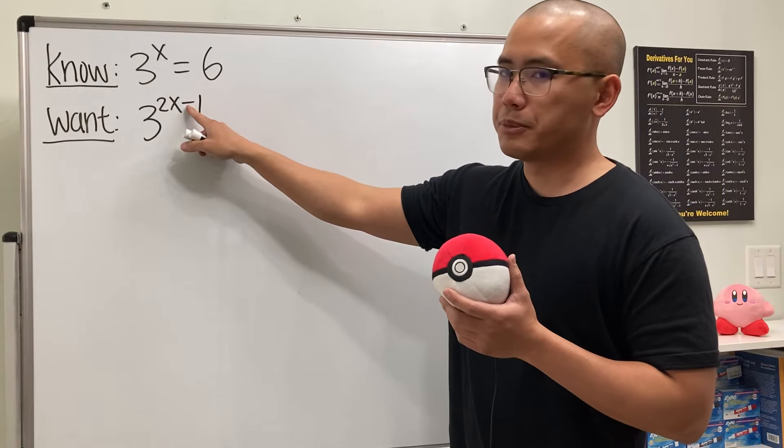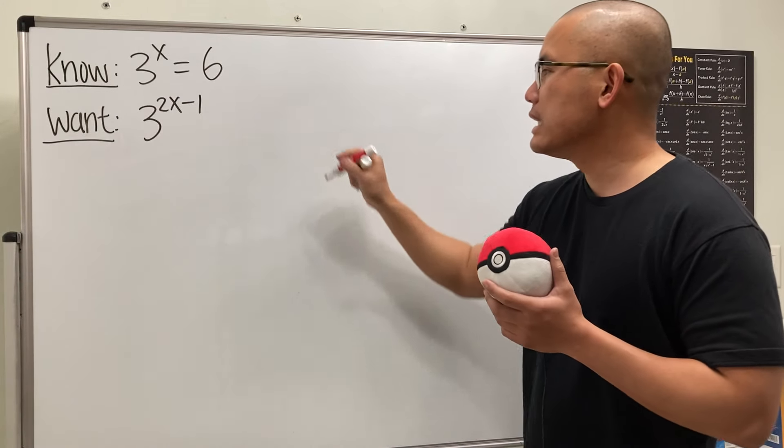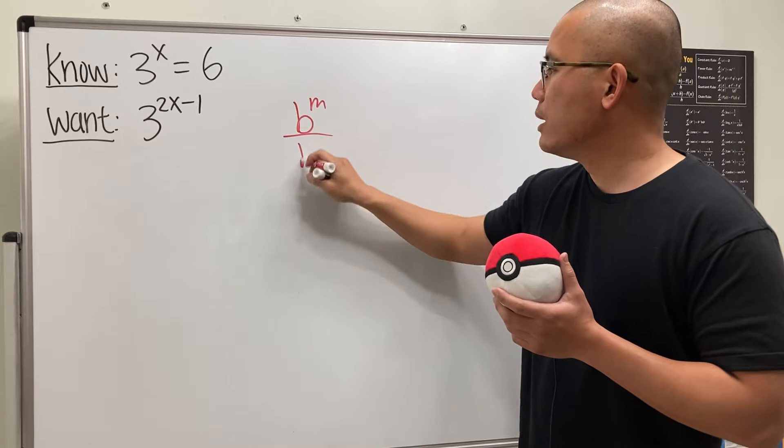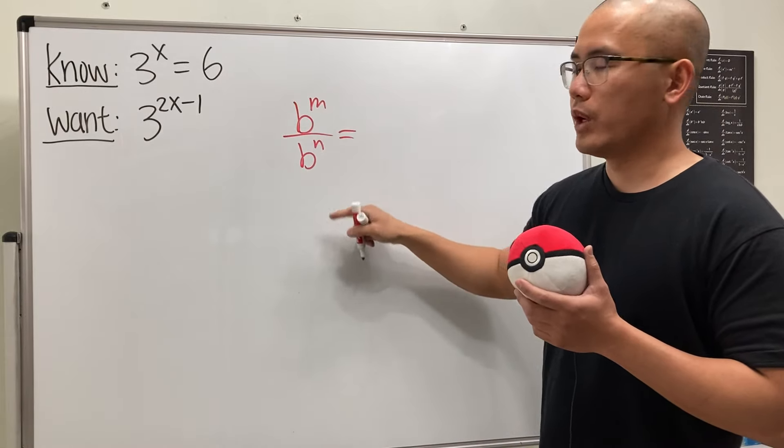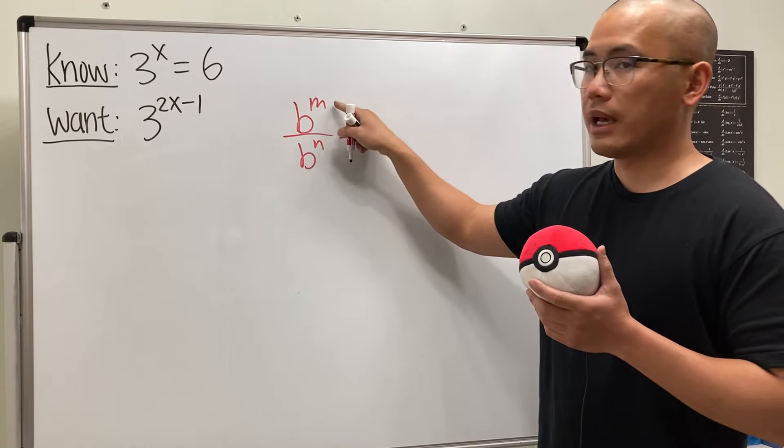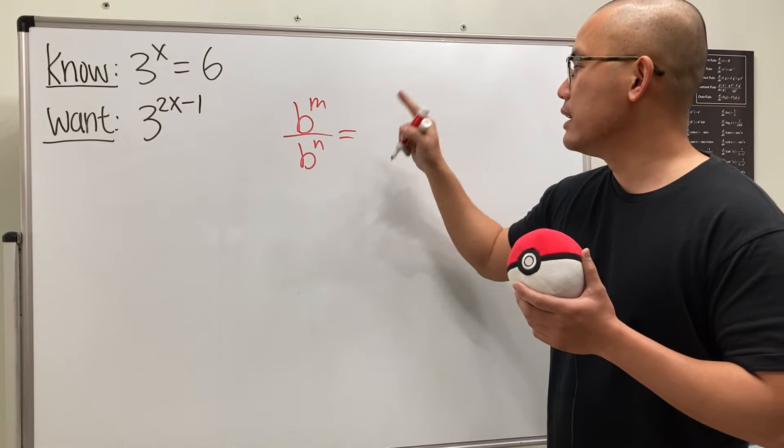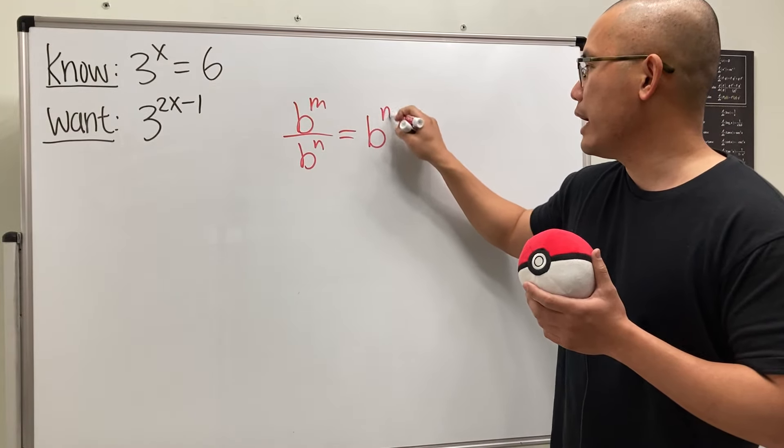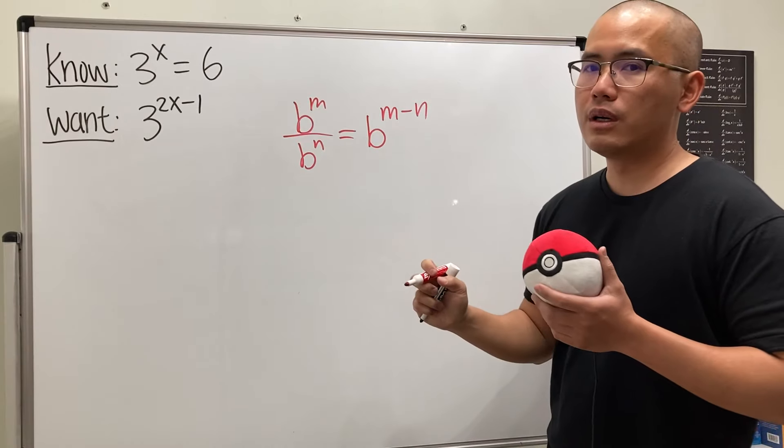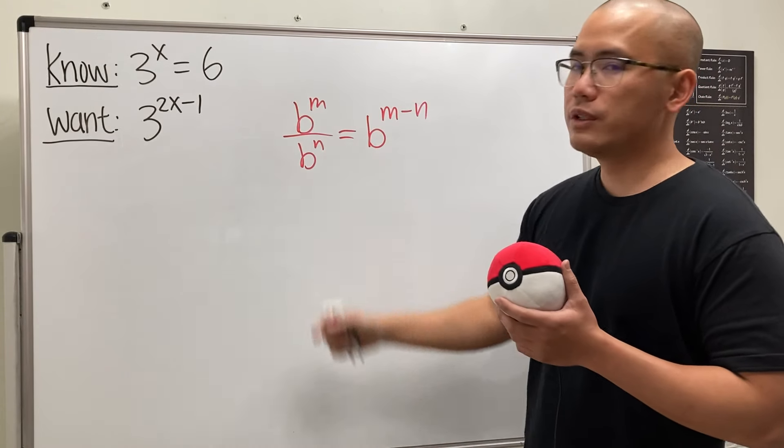Notice that we have a subtraction for the power, and recall that when we have b to the m's power over b to the n's power, well, the bases are the same. We can actually just subtract the exponents. This is the same as b to the m minus n's power. And if we look at this backwards,